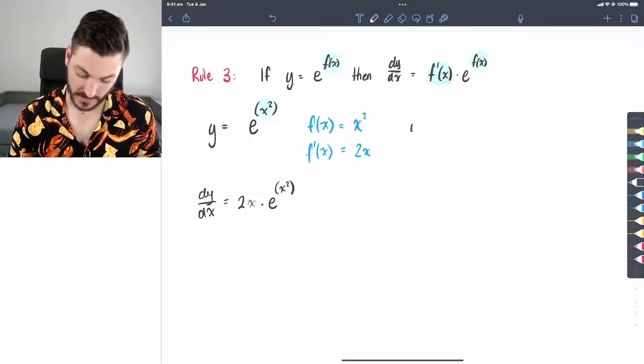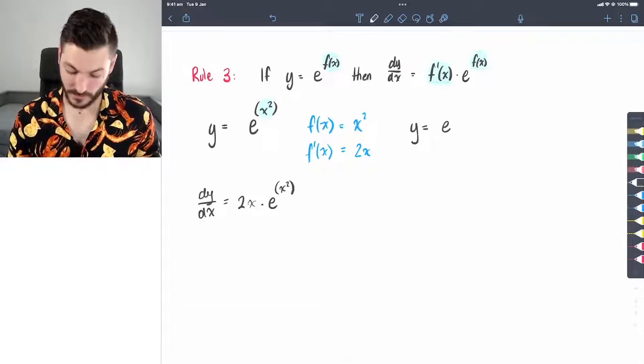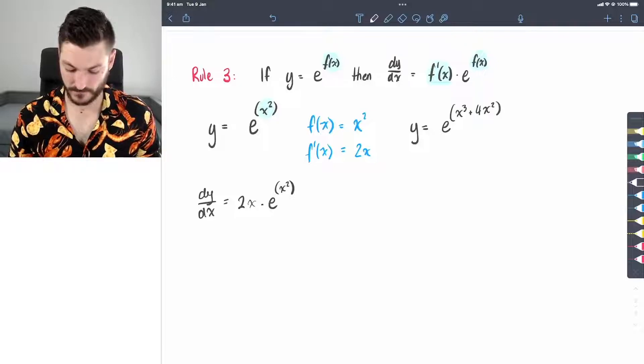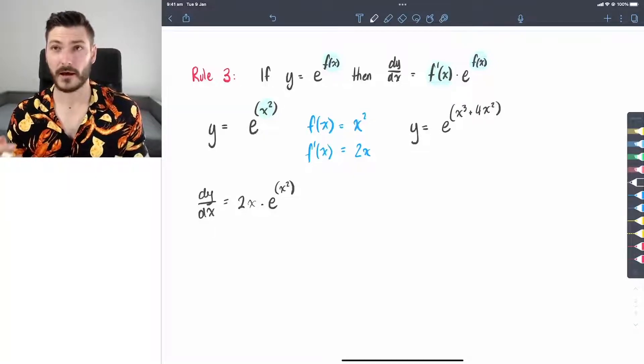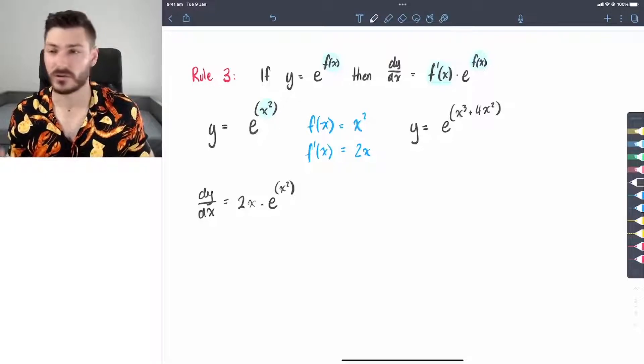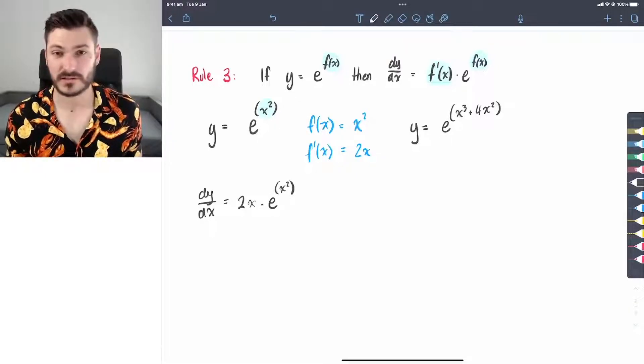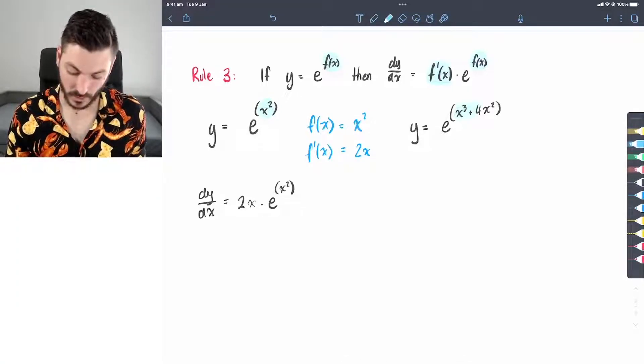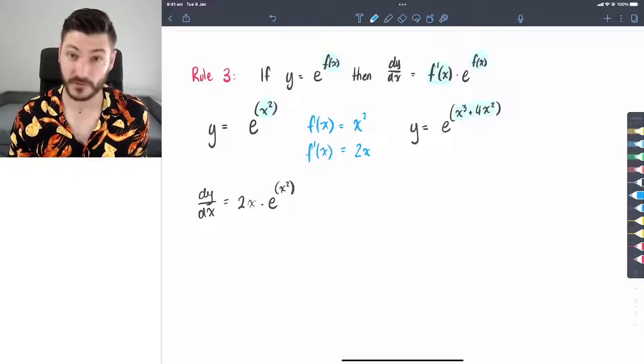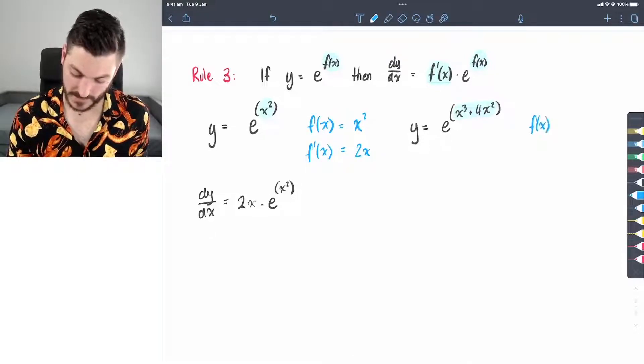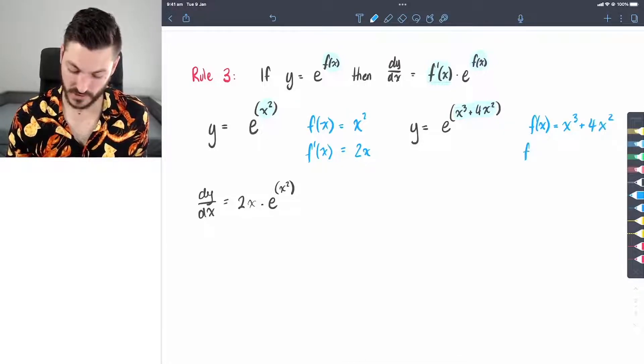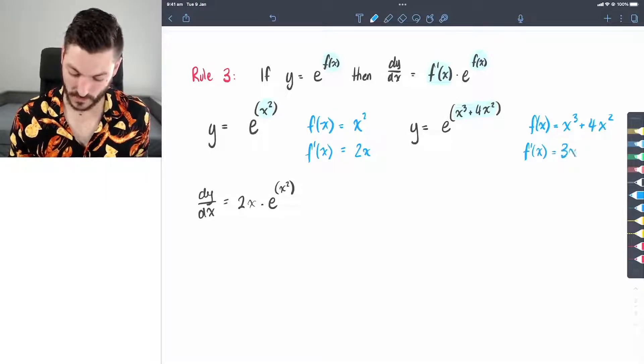I'll do one more example. Let's say y equals e to the power of x cubed plus 4x squared. Another polynomial. You can, of course, have trigonometric functions in the power. You could have log functions. You could have anything you want. I'm going to keep it with polynomials for this example. So highlight your other function of x. And we're going to write off to the side, f of x equals x cubed plus 4x squared. And the derivative of this function is 3x squared plus 8x.